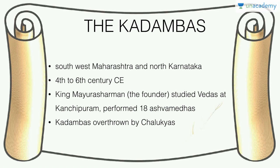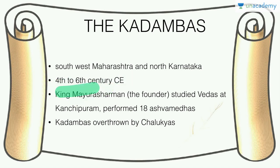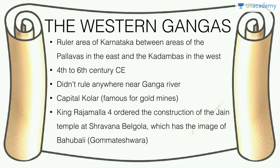The Kadambas were a southwestern and north Karnataka empire from the 4th to 6th century CE. Their famous founder was Mayurasharma, who studied Vedas at Kanchipuram and reportedly performed 18 Ashvamedha sacrifices. He was eventually overthrown by the Chalukyas.